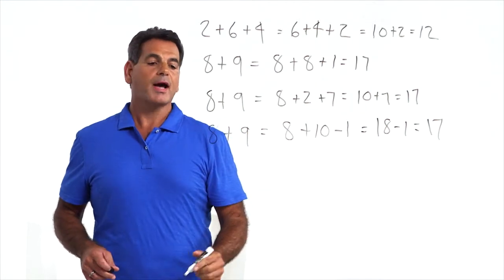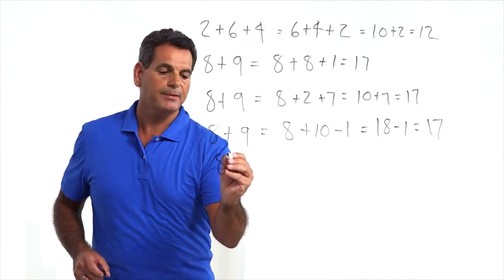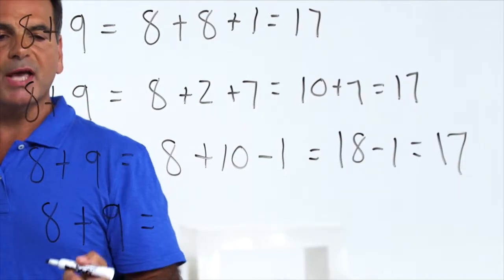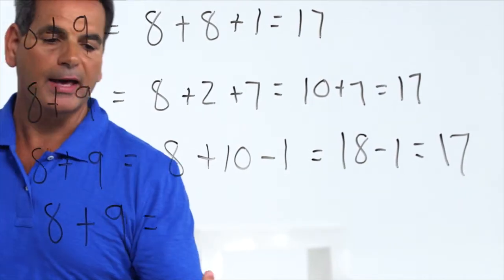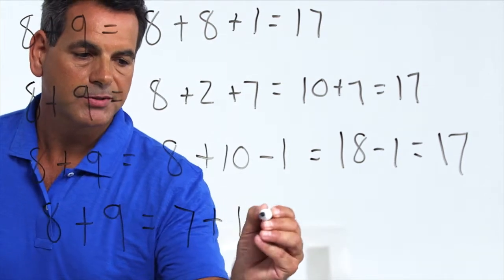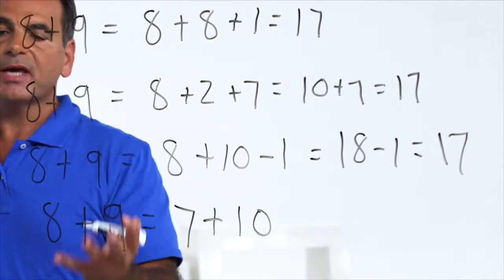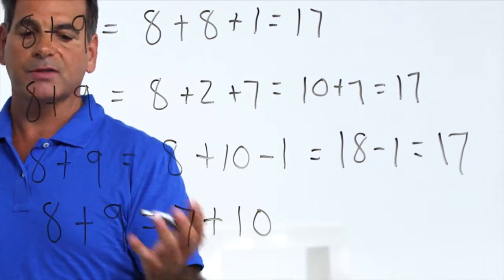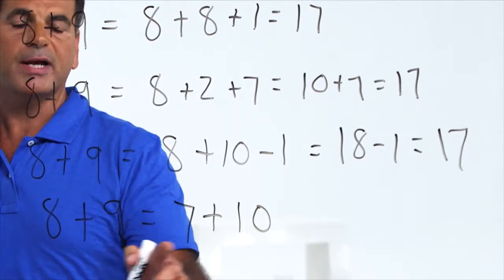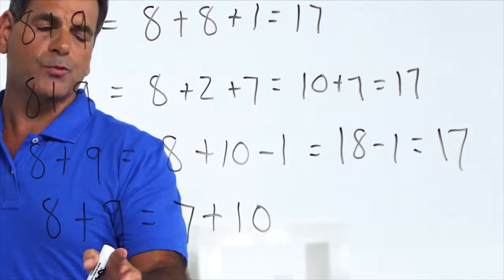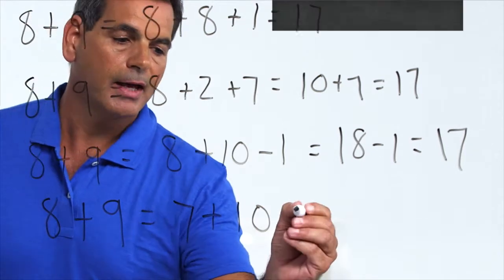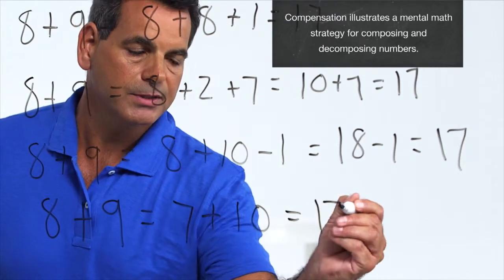Another strategy is compensation. Looking at eight plus nine again, by compensation we can write this as seven plus ten. Compensation means we're taking from one and giving to another — we took one from the eight and made it seven, and compensated by adding one to the nine to make ten. These are equivalent, and it equals seventeen.